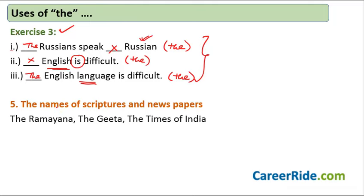Rule number five: we use the article 'the' before names of scriptures and newspapers. For example: the Ramayana, the Gita, the Times of India. Most of the time you will not have a problem with this rule, so let's move on.